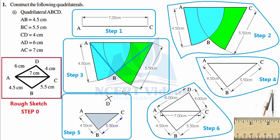With that arc drawn, readjust your compasses to 5.5 cm. Place the needle at point C and draw another arc so that it intersects the first arc. The common intersection area is where point B lies. Only a small amount of arc is needed — you don't need to draw large sweeping arcs. The intersection gives us point B. This is not a new concept; it is a revision from your previous standard.